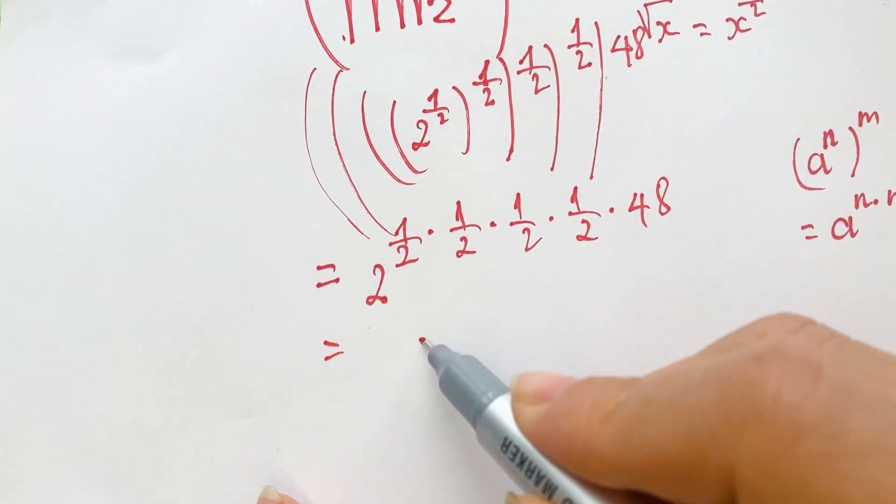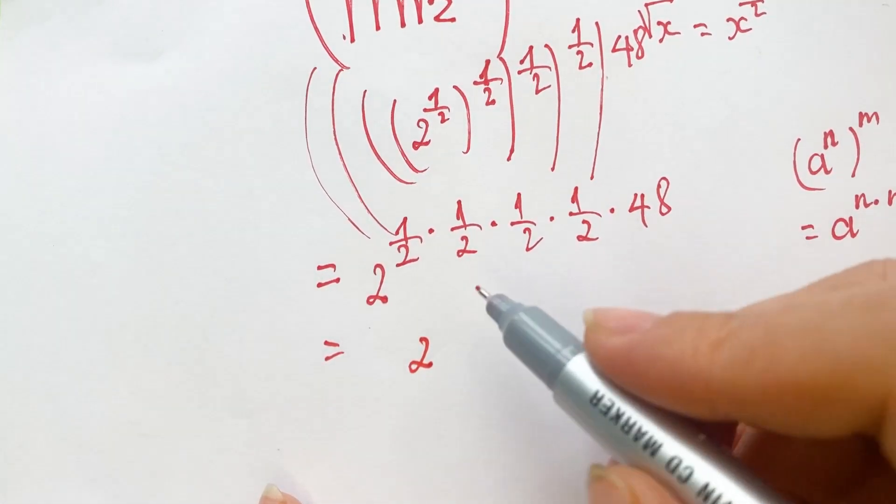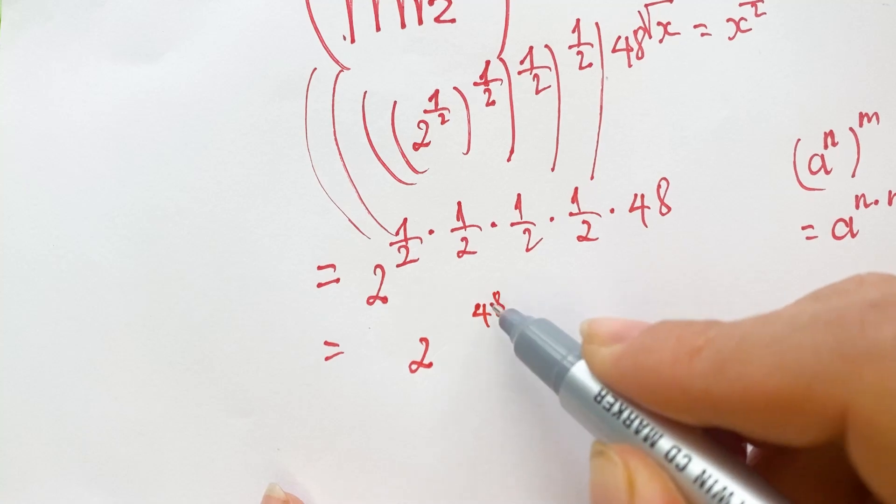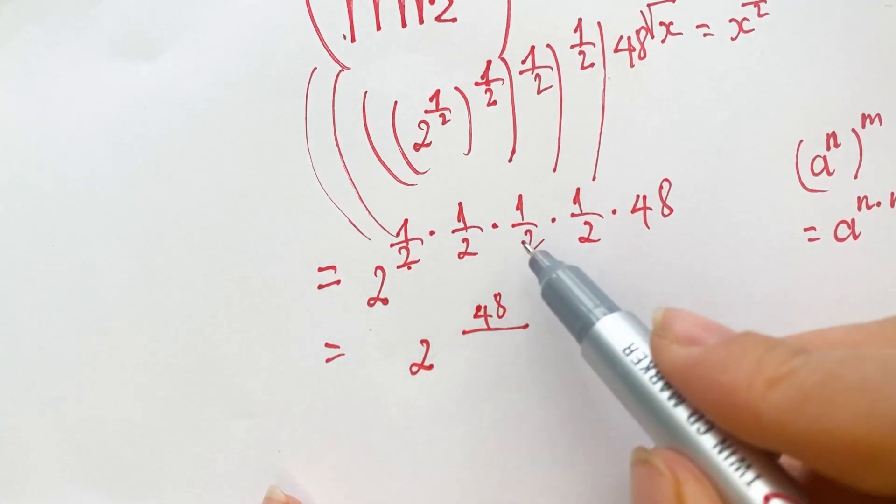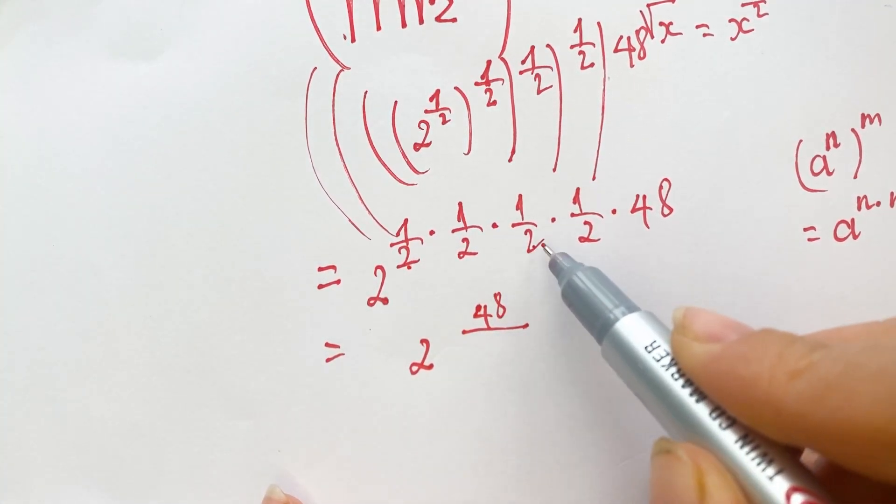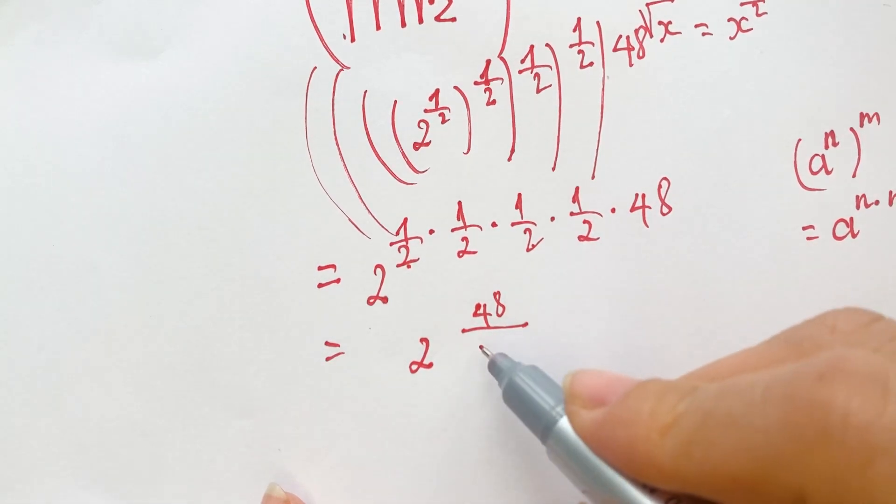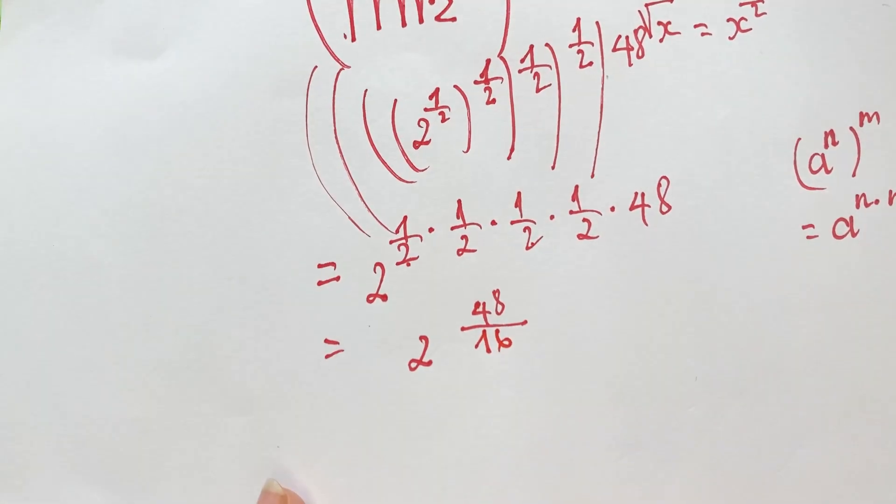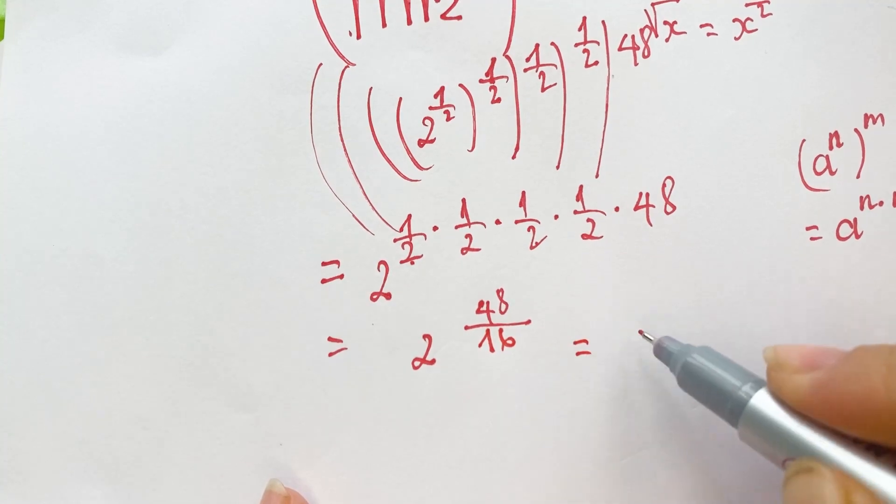We can see: four times four equals 16, eight times two equals 16, and we have two to the power...